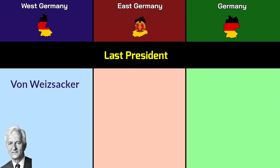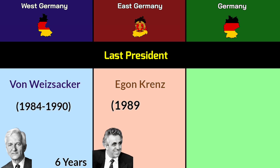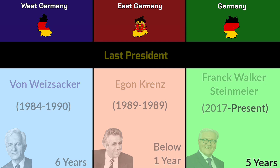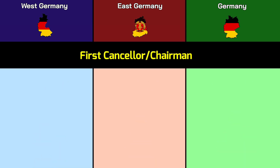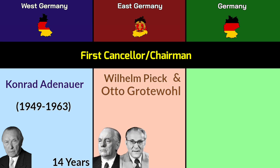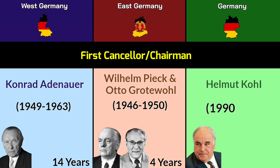Last president — West Germany: Richard von Weizsäcker, 1984–1990, total 6 years; East Germany: Egon Krenz, 1989–1989, below 1 year; modern Germany: Frank-Walter Steinmeier, 2017 to present, 5 years. Head of state title: Chancellor for West and modern Germany, Chairman for East Germany. First Chancellor or Chairman — West Germany: Konrad Adenauer, 1949–1963, total 14 years; East Germany: Wilhelm Pieck and Otto Grotewohl, 1946–1950, total 4 years; modern Germany: Helmut Kohl, 1990–1998, total 8 years.